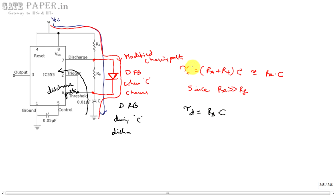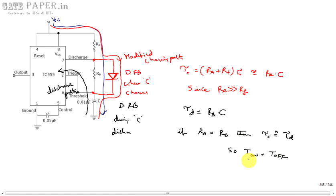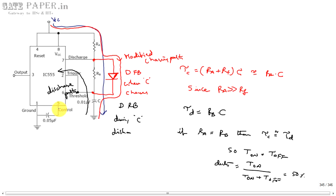The modified charging time constant is RA × C. If you choose RA equal to RB, then the charging time constant is approximately equal to the discharging time constant, so T_ON equals T_OFF. The duty cycle becomes T_ON / (T_ON + T_OFF) = 50%, which means the output is a square wave. By placing an extra diode across RB and making RA and RB equal in value, you can generate a square wave.